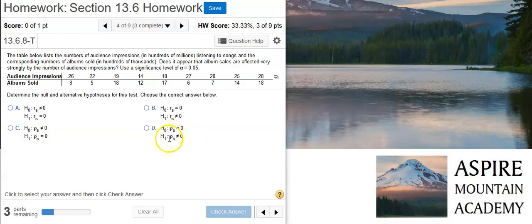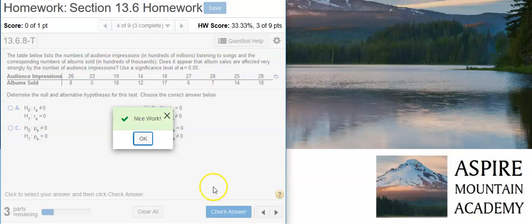We want to get a population parameter because we always use population parameters with our null and alternative hypotheses. So we don't want to choose a sample statistic. That means we're going to select this answer option here. Nice work!